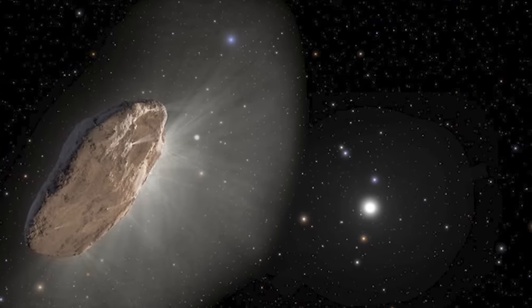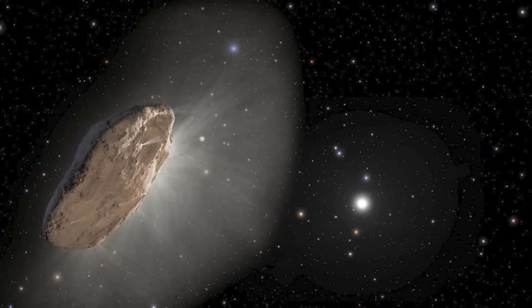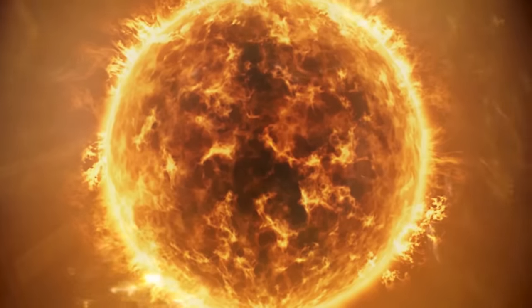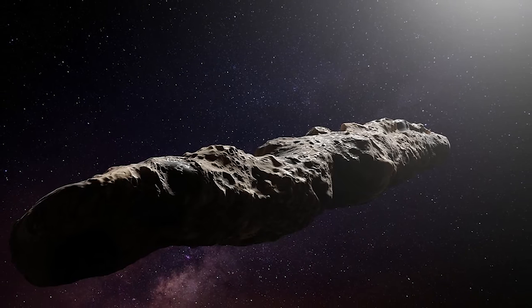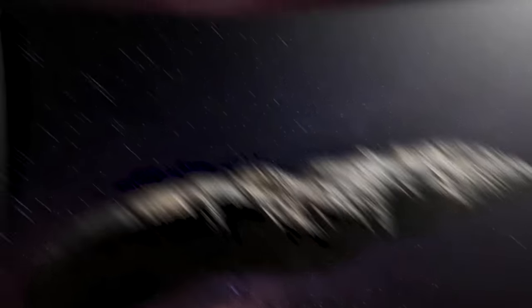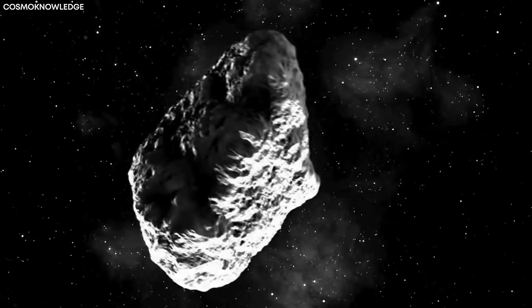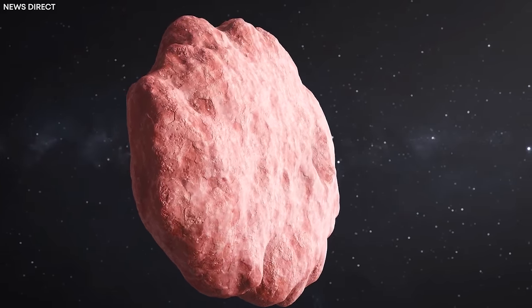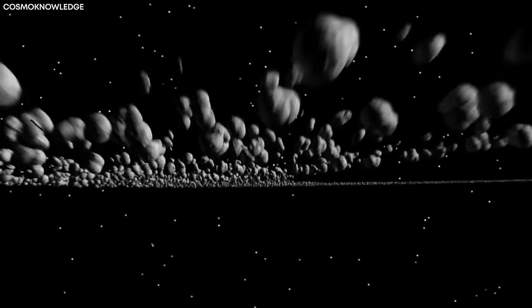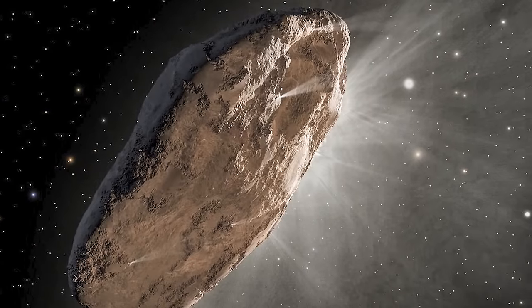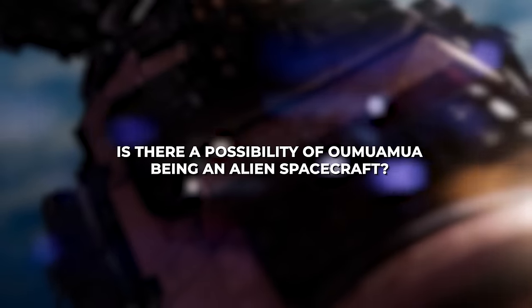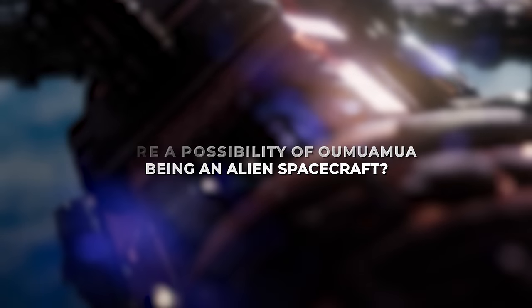Now let's consider the possibility of Oumuamua being an asteroid. Asteroids are small rocky bodies that come in various sizes and shapes orbiting the sun. In this case, Oumuamua's elongated shape sets it apart from primarily spherical asteroids. Additionally, Oumuamua's non-gravitational acceleration, along with other peculiar behaviors, further distinguishes it from typical asteroids. Therefore, classifying Oumuamua as an asteroid would be highly unusual.